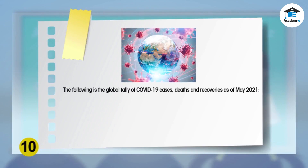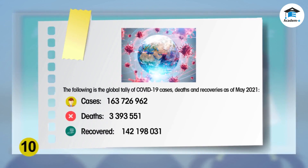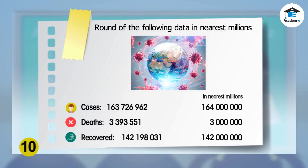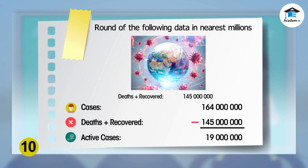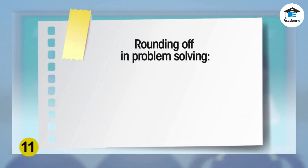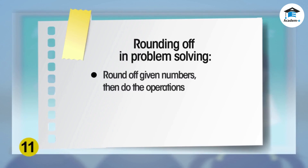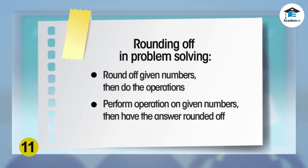Let's now solve a problem where we will need to round off numbers. To solve this, the first step will be to round off all these figures to the nearest millions. Add up the rounded-off figures for deaths and recovered cases, then subtract this from the rounded-off figure for the total number of cases. In this problem, we rounded off the given numbers then performed the operations. In other problems, you may have to perform the operations with the unrounded numbers and then have the answers rounded off.